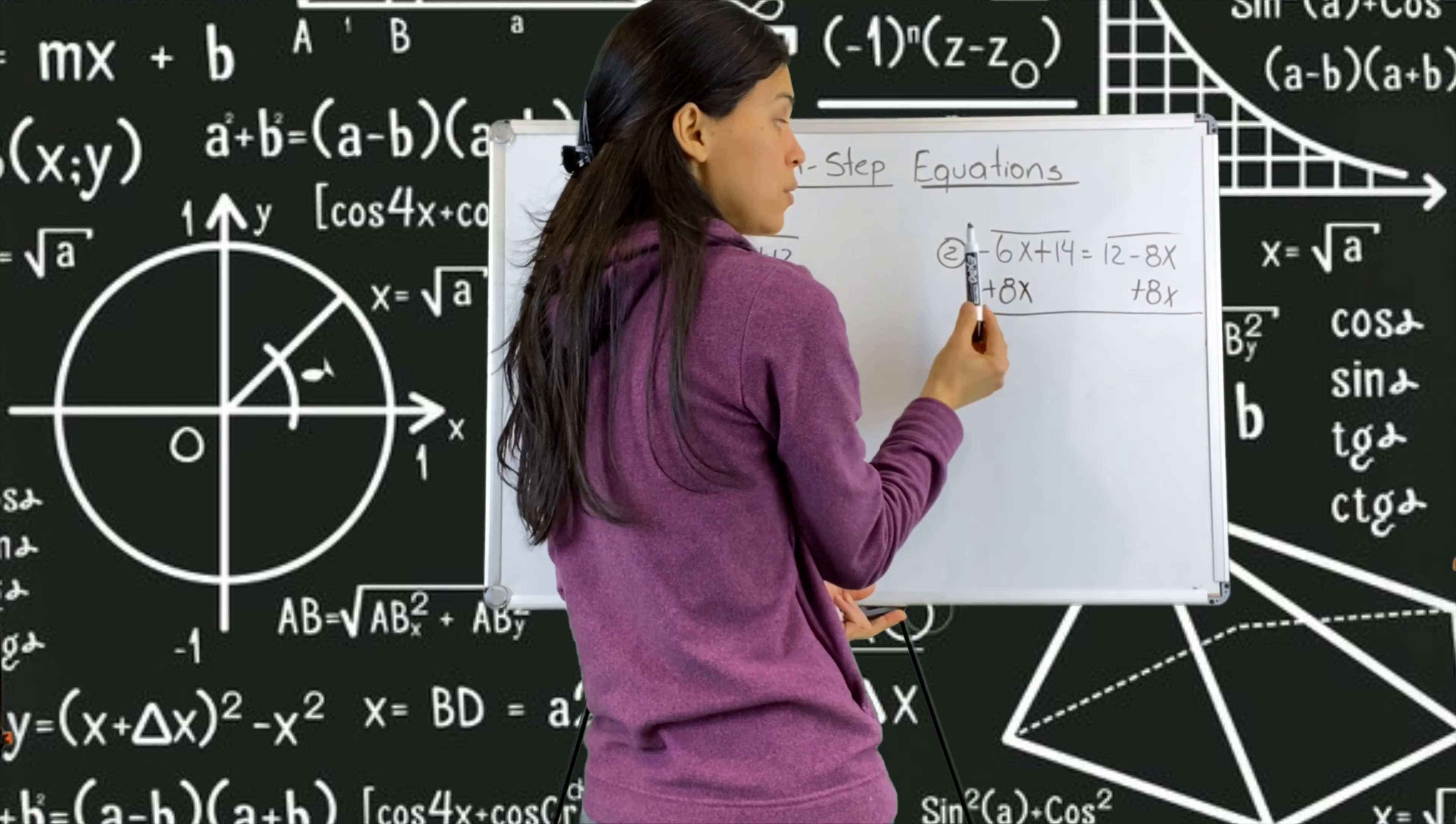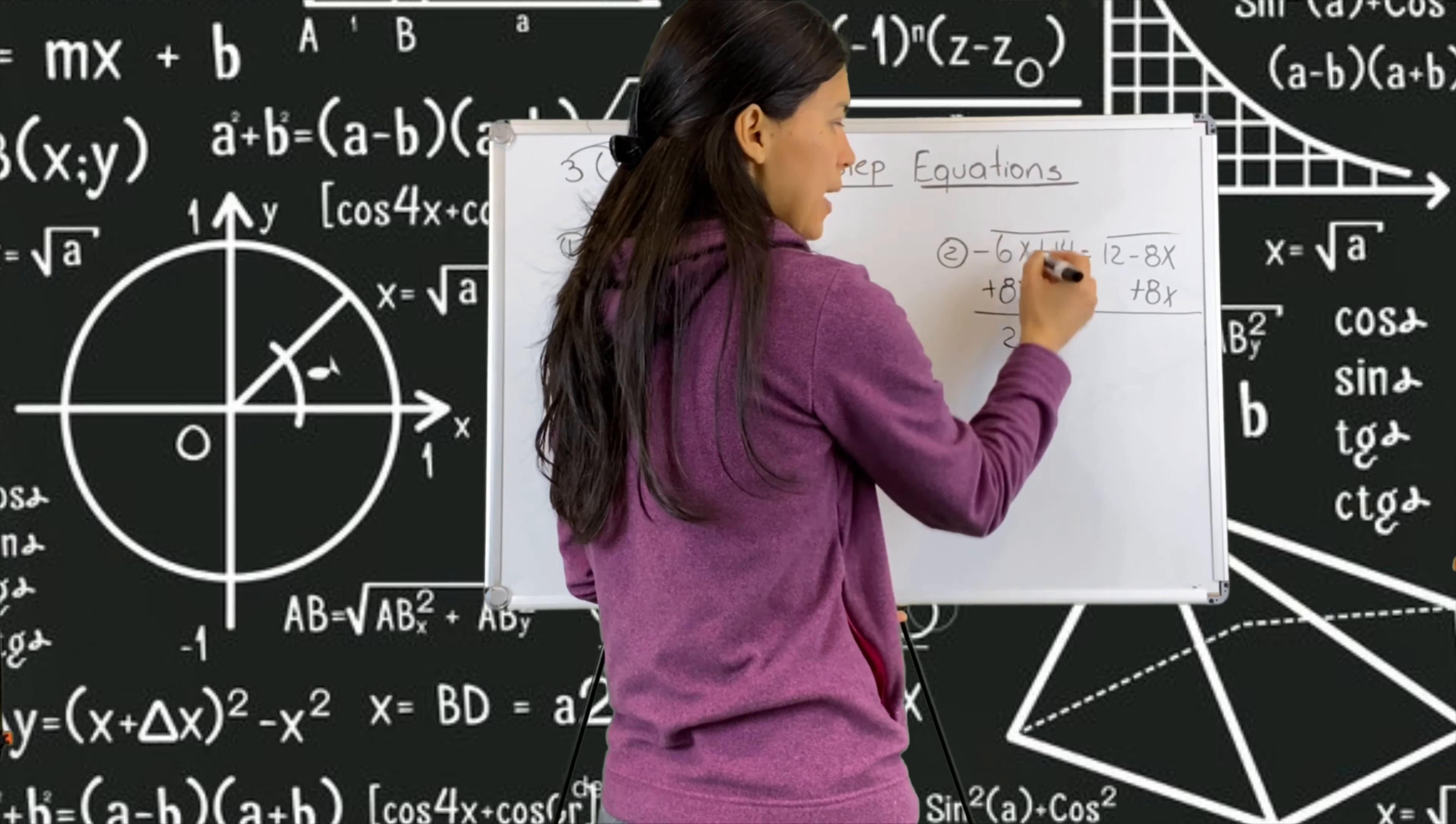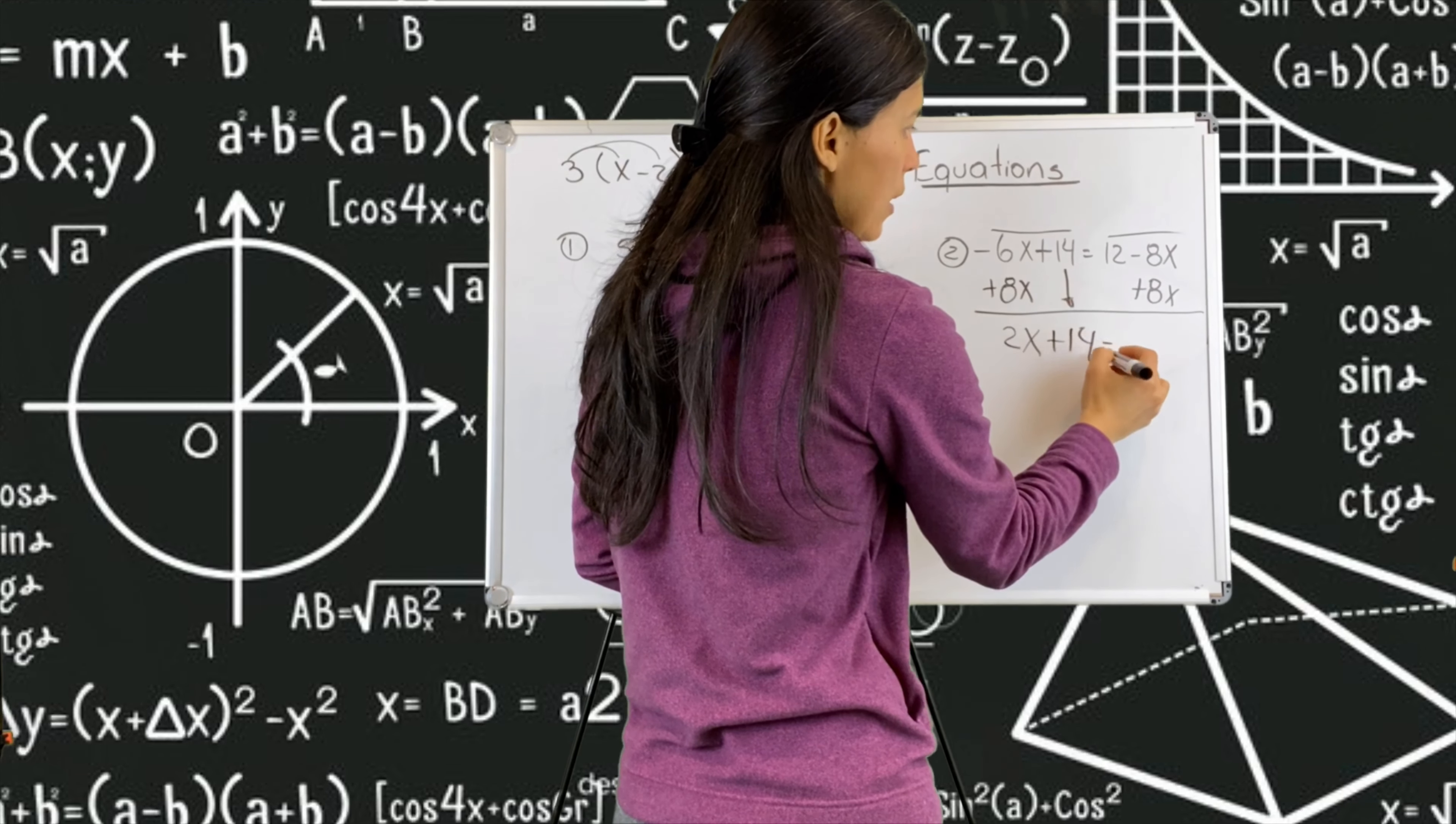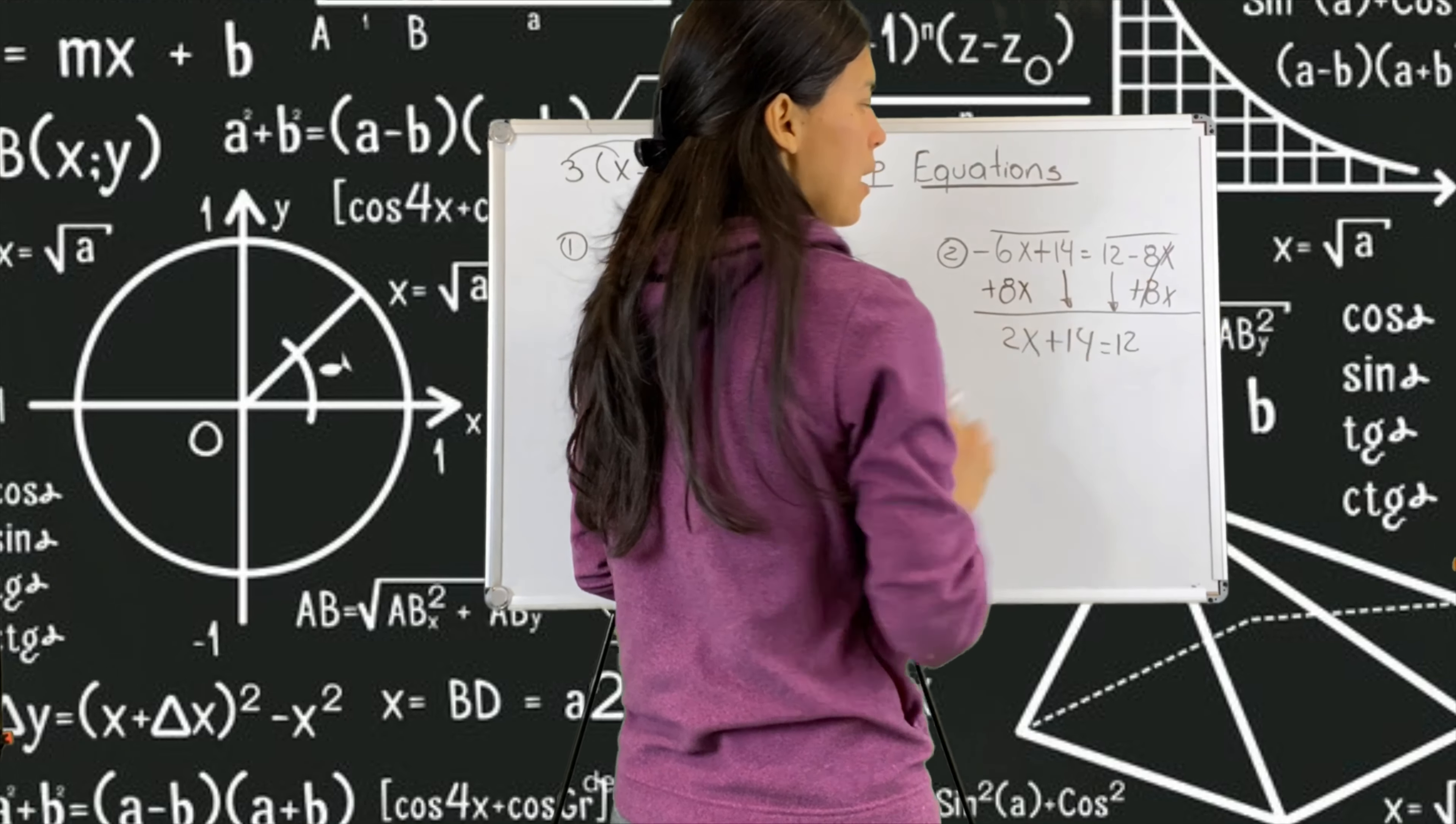If you put negative six plus eight in your calculator, you will get a two x. Remember the x. I bring down the plus 14. I copy that equal. I bring down this 12. And this x cancel each other.